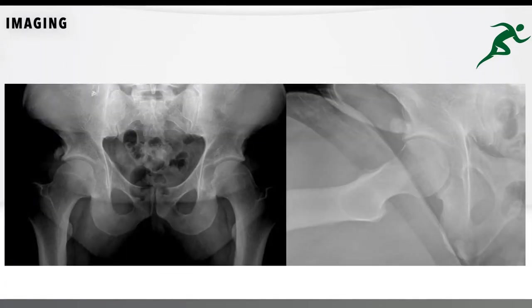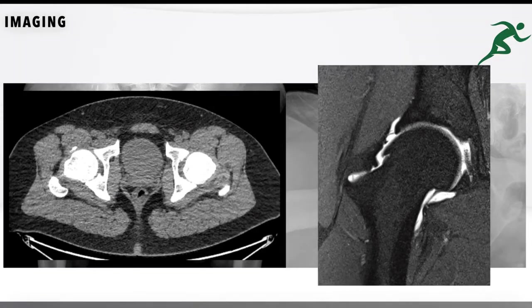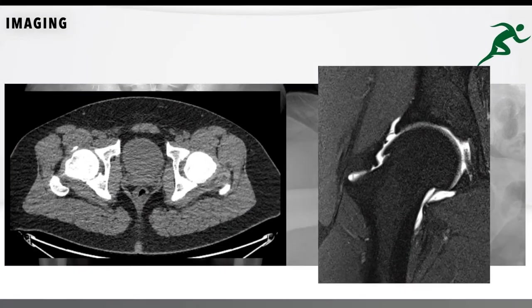The patient's x-rays demonstrate residual impingement with a heterotopic ossification localized in the anterolateral region of the hip, an alpha angle of 55 degrees, and a lateral center edge angle of 38 degrees. The MRA revealed an acetabular labral retear with mild evidence of cartilage degeneration near the labral repair. CT shows heterotopic bone formation and reconfirms residual impingement.